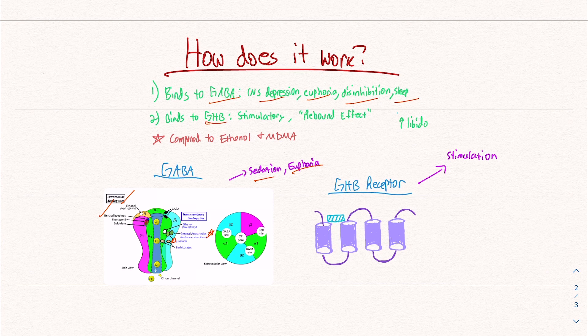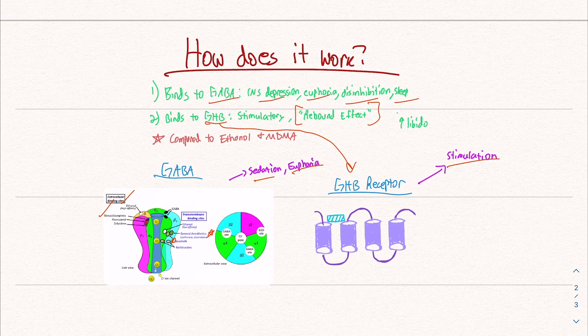GHB also connects to the GHB receptor, which is very interesting because this is what causes a stimulation-like effect. And the name for this whole thing is the rebound effect. I thought this was interesting because I believe this is how this drug is used for the excessive sleepiness in Xyrem for narcolepsy.